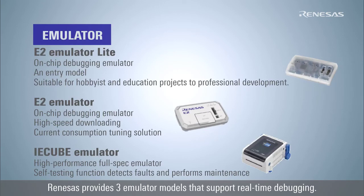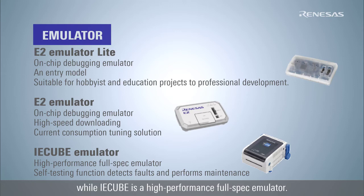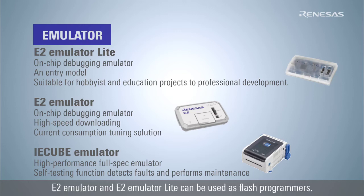Renesas provides three emulator models that support real-time debugging. The e2 emulator Lite is an entry model suitable for new starters, the e2 emulator has high functionality for more efficient development, and the IECUBE is a high-performance full-spec emulator for the RL78 MCU family. The e2 emulator and e2 emulator Lite can also be used as flash programmers.